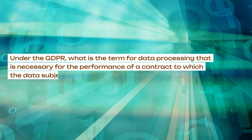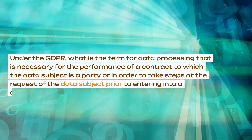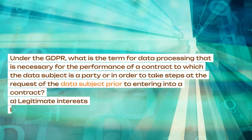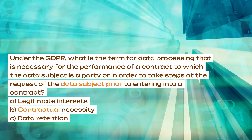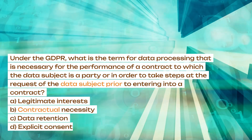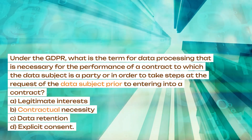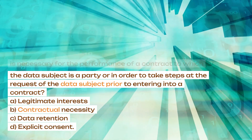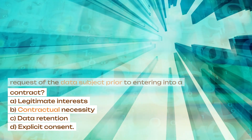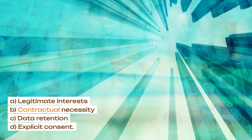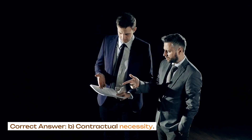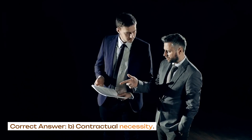Under the GDPR, what is the term for data processing that is necessary for the performance of a contract to which the data subject is a party, or in order to take steps at the request of the data subject prior to entering into a contract? A. Legitimate interests. B. Contractual necessity. C. Data retention. D. Explicit consent. Correct answer: B. Contractual necessity.